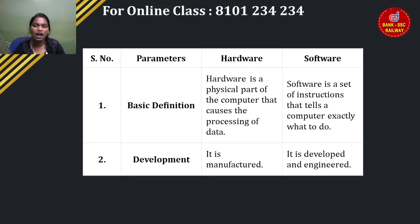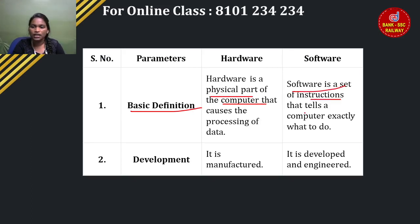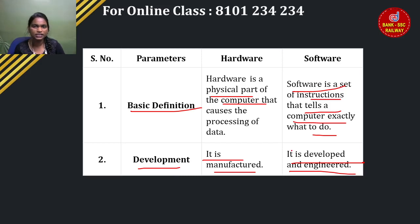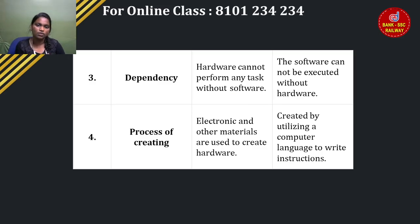Let's differentiate hardware and software. First, the basic definition: hardware is the physical part of the computer. Software is the set of instructions and programs. For development: hardware is manufactured — it is man-made. Software is developed and engineered through coding. For dependency: hardware cannot perform any task without software.